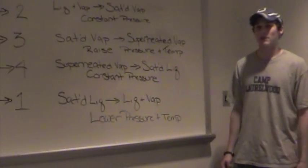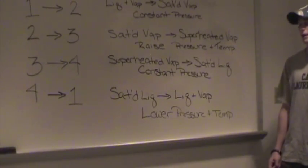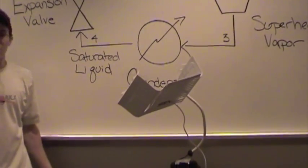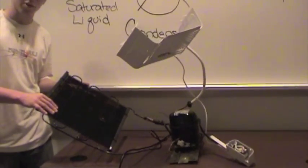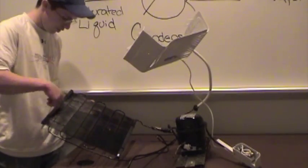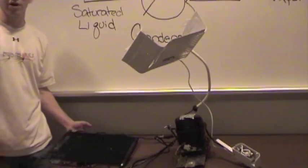The next step takes the superheated vapor and condenses it to saturated liquid at constant pressure. That step is the condenser. That is also at constant pressure, and again, may not look like more than just metal, and that's really all it is. The fluid passes through here, condenses, and then into the valve.